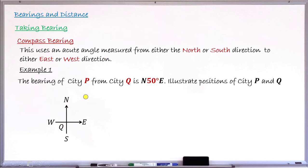The rule says we take the bearing from either north or from south. The bearing given starts with north, which means this angle is measured from the north line and it is towards east — that is, to the right. This is the north line and this is the eastern direction, so the angle is measured from this line towards the right. This is the angle — 50 degrees. So the direction of CTP will be along this line. This is the position of CTP.